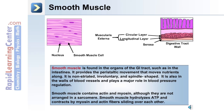This is depicted in the image on the right side of the screen, which is a cross section of the digestive tract wall. The circular layer and longitudinal smooth muscle layers are contained in the muscularis externa. Smooth muscle provides the peristaltic movement that moves nutrients through the GI tract.